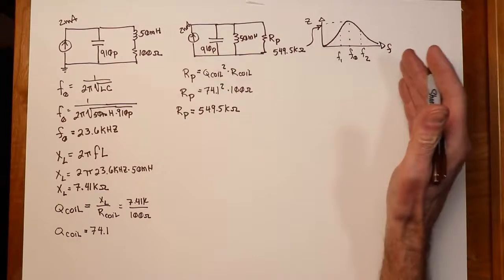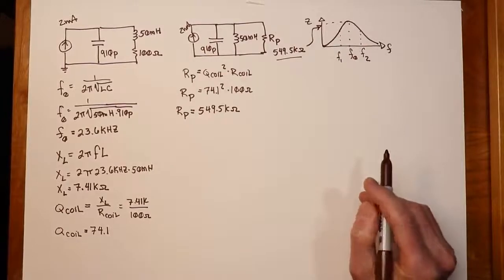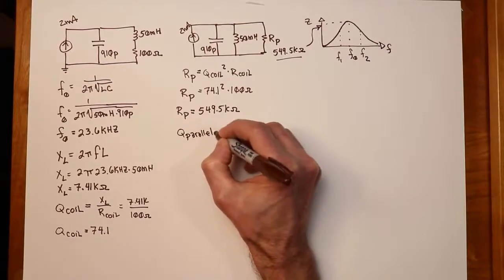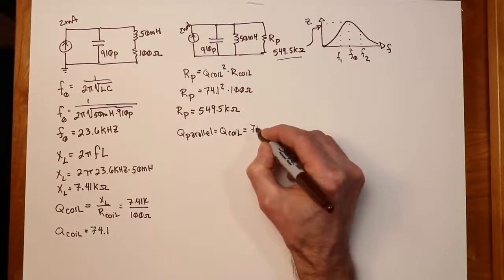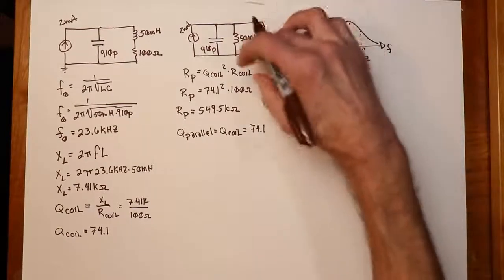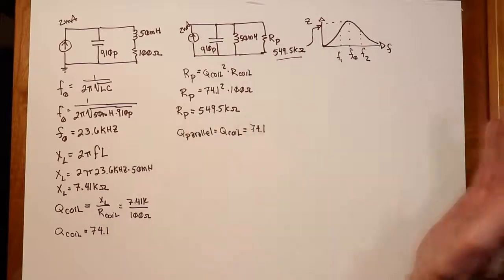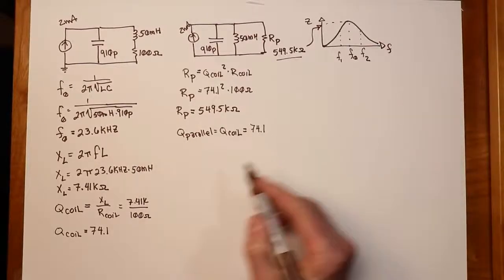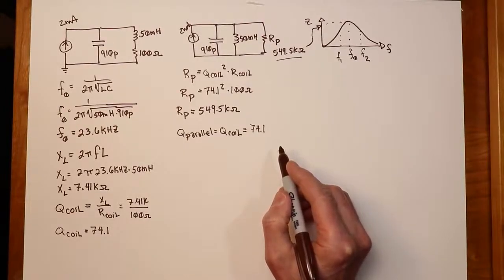Now, because there are no other resistances, the only resistance we have here is the transformed value of our coil, in other words, this guy right there, it must be the case that Q of the parallel network would have to equal Q of coil. In our case, 74.1. Now, if we did have another resistance, that would be in parallel, and we'd have to figure out a new RP value. And from that, we could then come up with a new value for the Q and so forth. But for now, we'll just continue where we are, and we can go back and look at that in a moment.